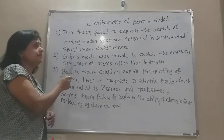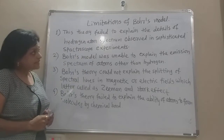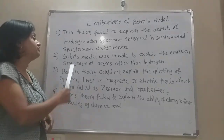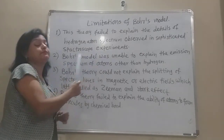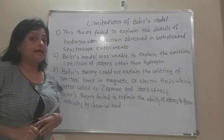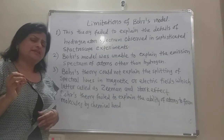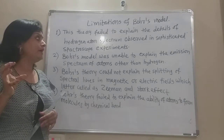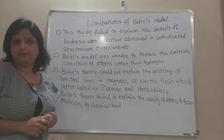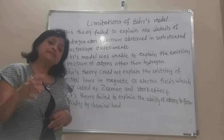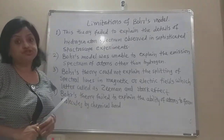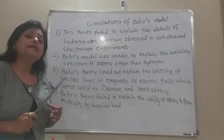The first limitation is that Bohr's theory failed to explain the details of the hydrogen atom spectrum observed in sophisticated spectroscopic experiments. When the spectrum is observed with a sophisticated spectroscope, finer lines appear in the emission spectrum that Bohr's theory failed to explain — this is called the fine structure of the hydrogen emission spectrum.